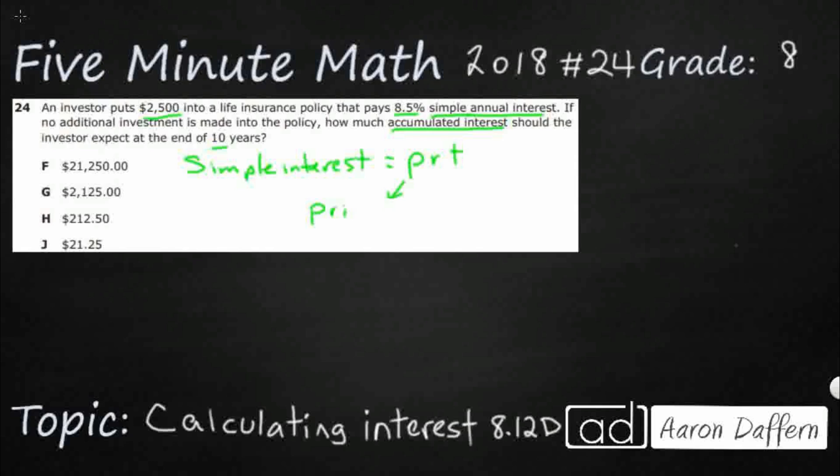So P is for principal. And so our principal is going to be the amount of money that is drawing interest. In this case, we have started with $2,500 and we're not making any additional investments. If you add extra money, your principal changes every time you add the money. But we're just going to stay with that $2,500.